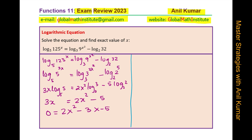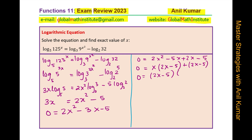Let's factor this quadratic. We are looking for product of -10 and sum of -3. We split the middle term as -5x + 2x, giving 2x² - 5x + 2x - 5 = 0. Factoring: x(2x - 5) + 1(2x - 5) = 0, so (2x - 5)(x + 1) = 0. This gives x = 5/2 or x = -1.